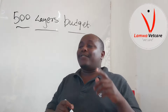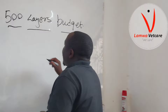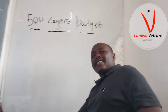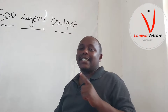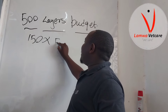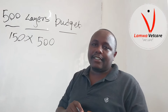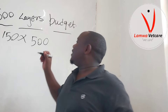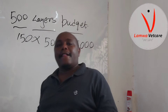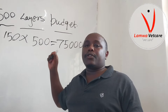Point number one: the cost of a chick as of now is between 100 and 150 shillings per bird. Let's work with 150 shillings as the cost of purchasing a day-old chick, and keeping in mind we need 500 birds — that gives us 75,000 Kenyan shillings as the cost of investment in terms of purchase of chicks.